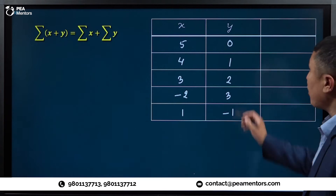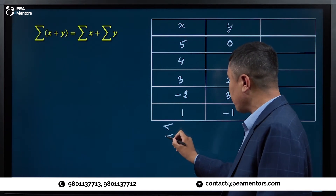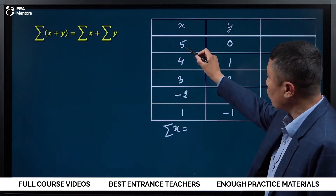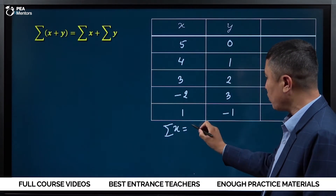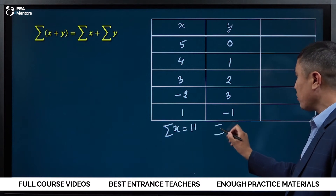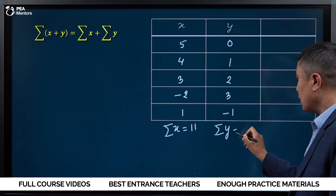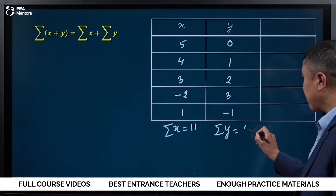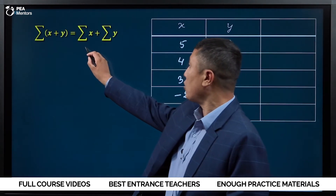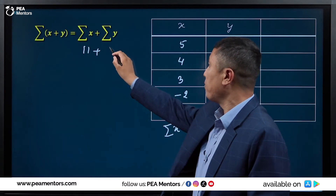Now, we have to calculate the sum of x. Summation of x is 12 plus 1 is 13, minus 1 is 11. We have to calculate the sum of y. Summation of y is 5. Summation of x is 11 and summation of y is 5.